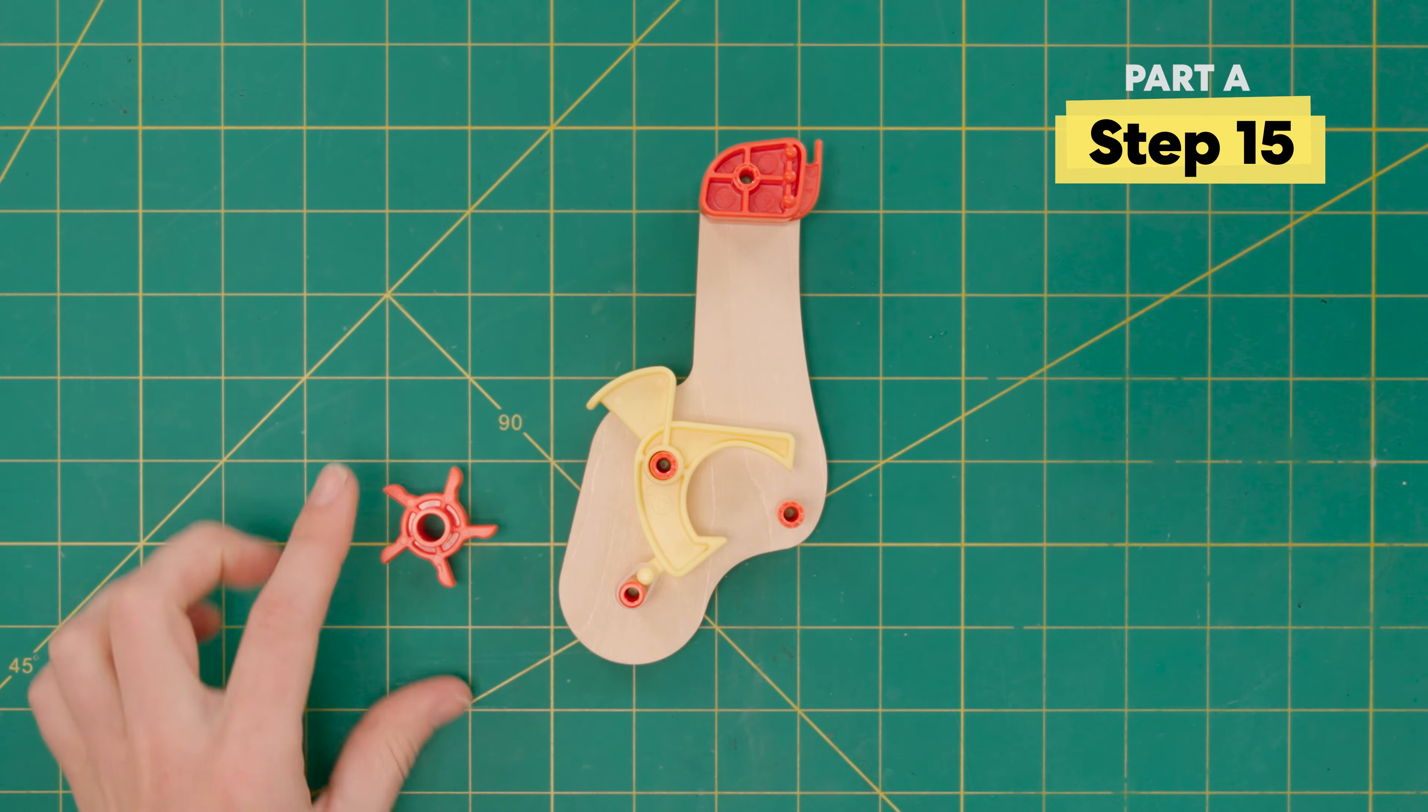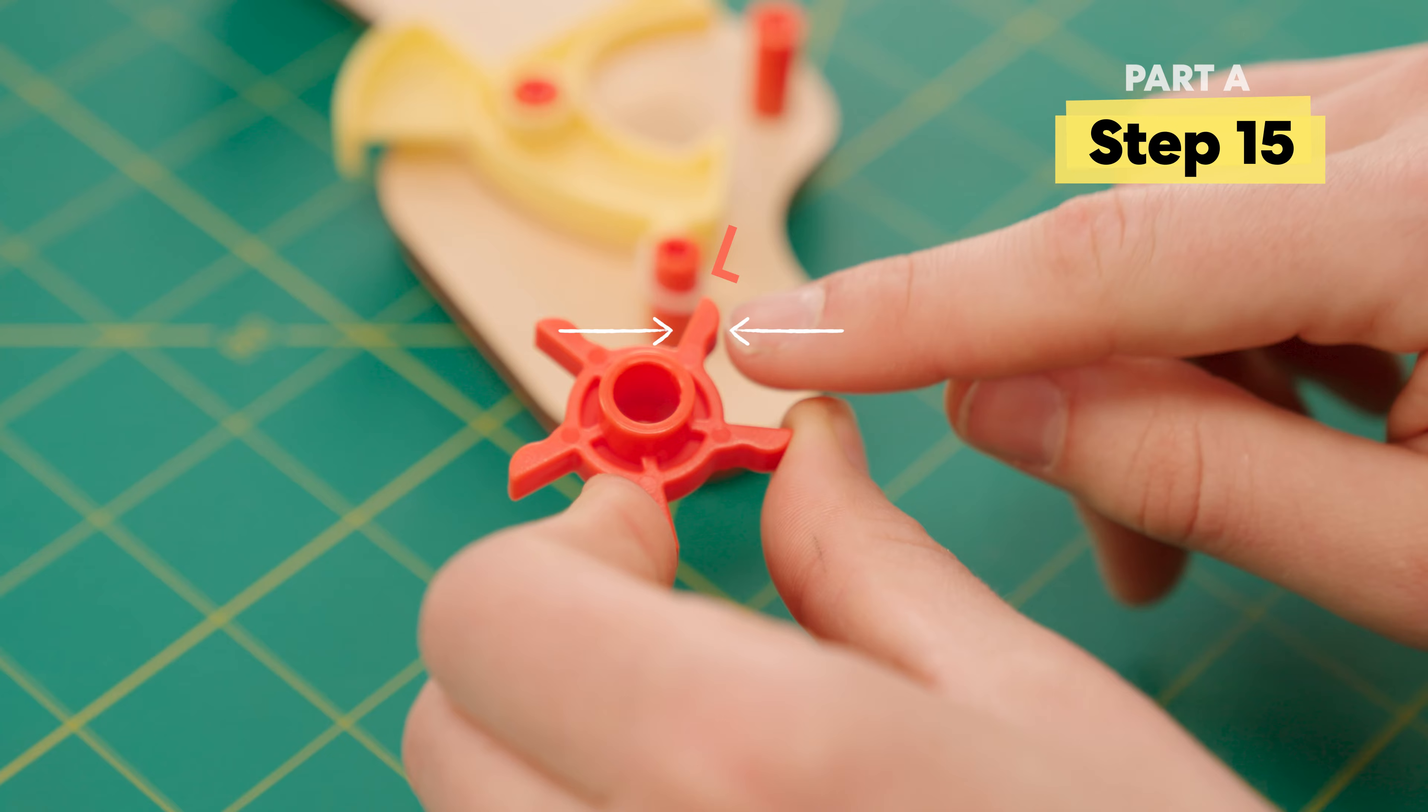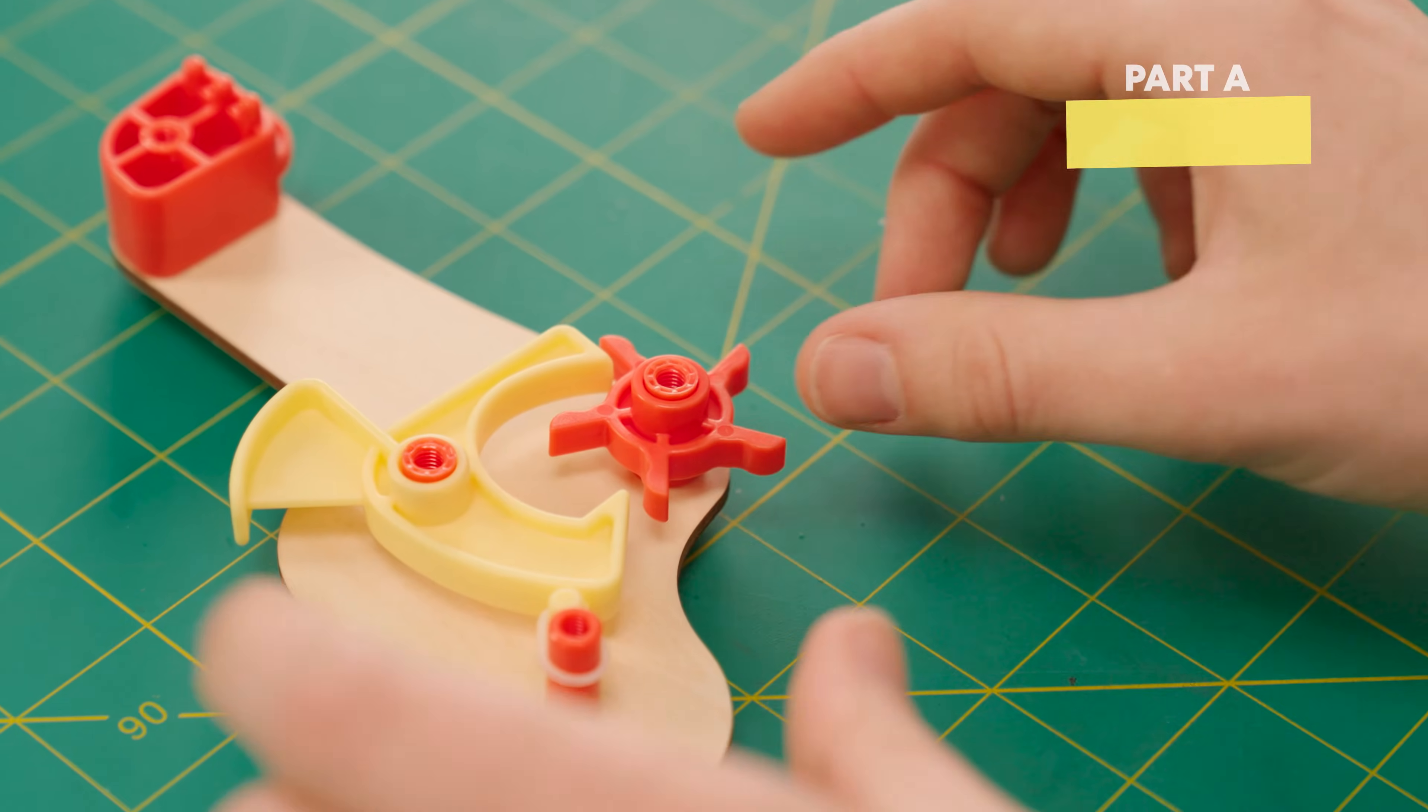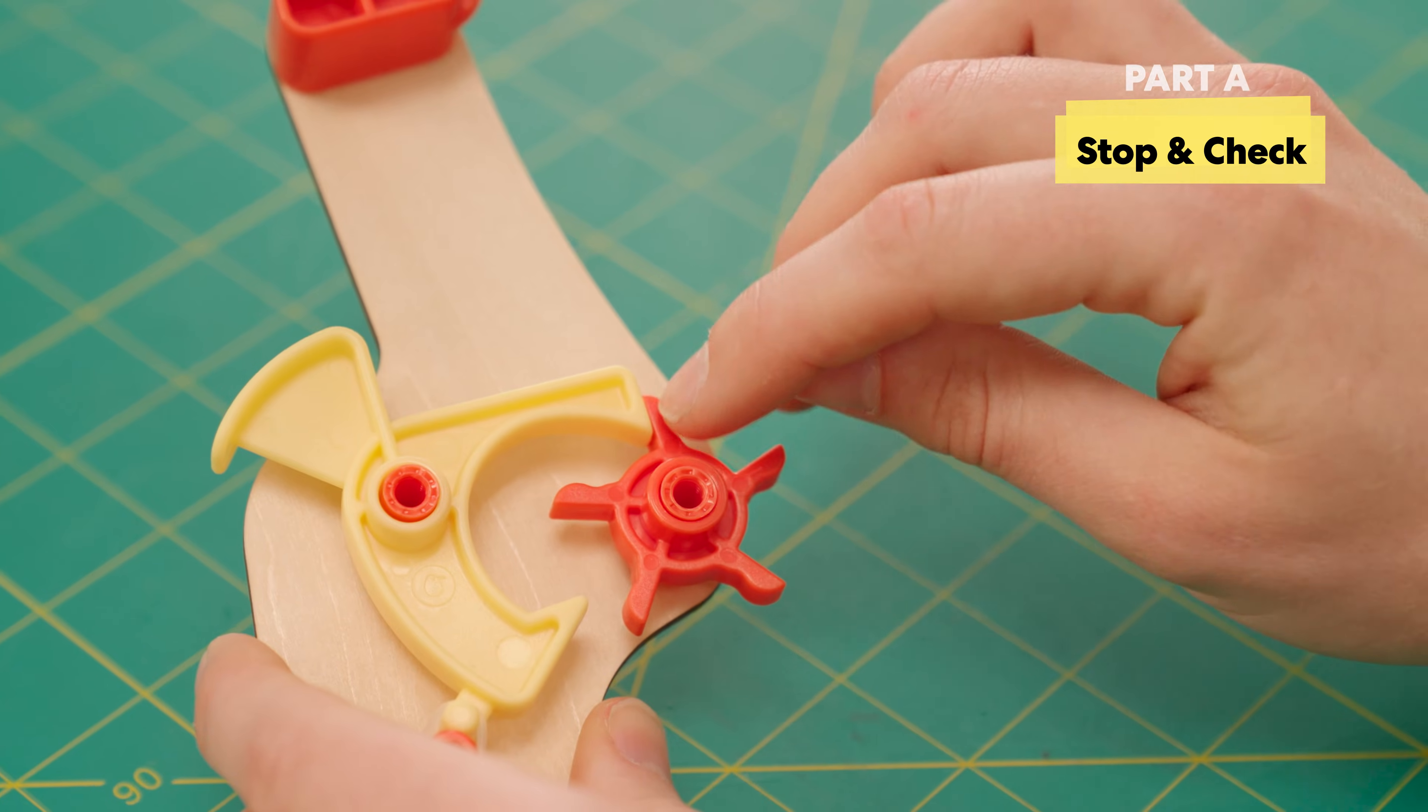Next, we're going to find the other peg wheel and again make sure that the correct letter is facing up, so we want the L to be facing up. Slide it on this peg and just double check that the flat edge of the peg wheel is against the flat edge of the trigger.